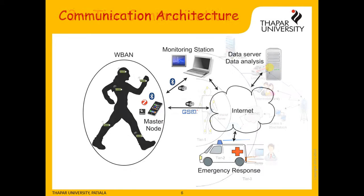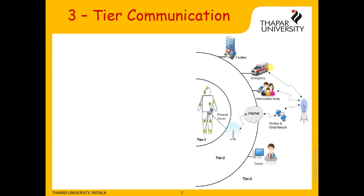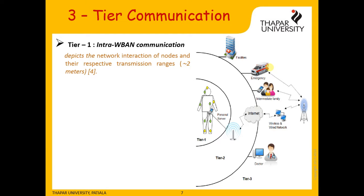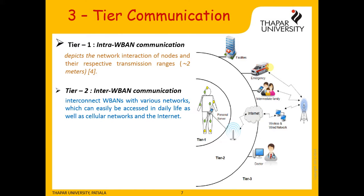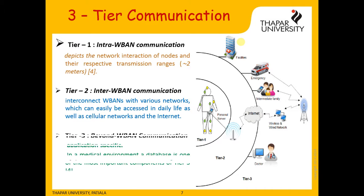More clearly, this can be shown in a three-tier architecture. In the first tier, sensor nodes are used to collect the data. The second tier consists of the interconnecting networks like GSM and Bluetooth that transmit the information. The third tier is the destination where the information is stored.